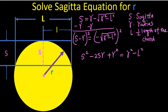Let's combine like terms. First we're going to add 2sr to both sides, and then we're going to subtract r squared from both sides. We're also going to add l squared to both sides.